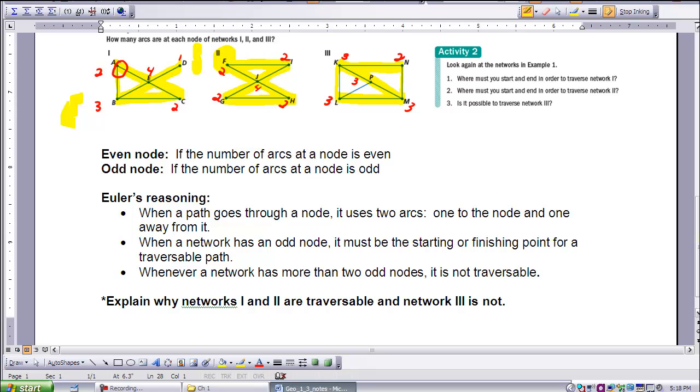As we look here, we started this one at an odd node, and we finished at an odd node. In network two, there were all even nodes, and it didn't matter. It happened to start at F. Did anyone start at a different one? Here you can see I can do it at I also. So you may start at any node, and you will finish at that same node when they're all even.